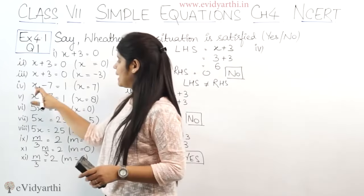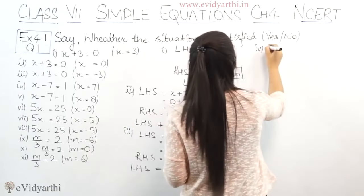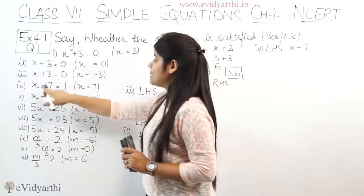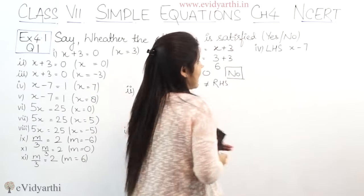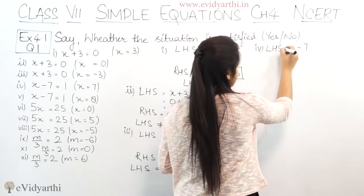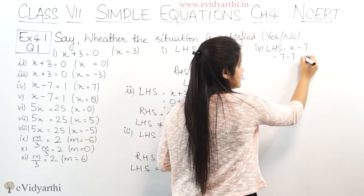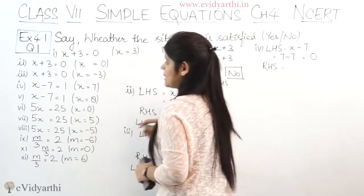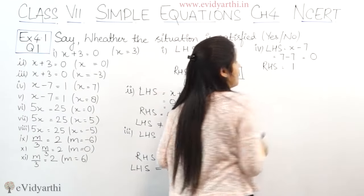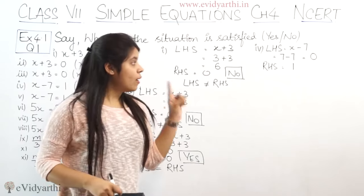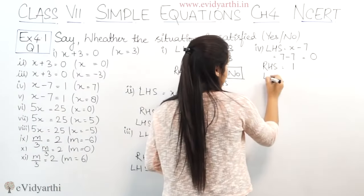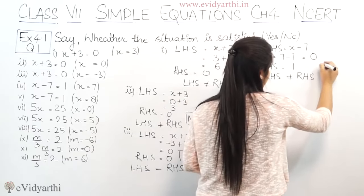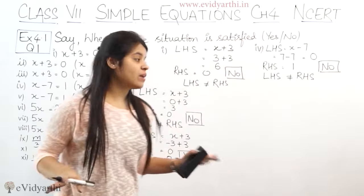In the fourth part we have the equation x minus 7 equals to 1. First we write the left hand side: x minus 7. The x value given is 7. So putting 7 in place of x: 7 minus 7 is 0. RHS is 1. LHS is not equal to RHS, so the answer is no — the equation is not satisfied.